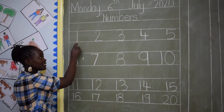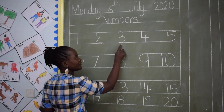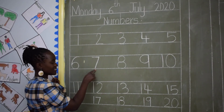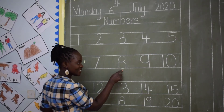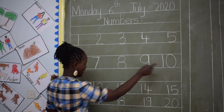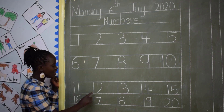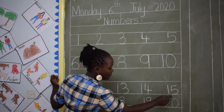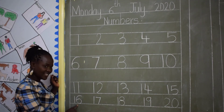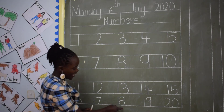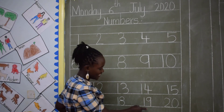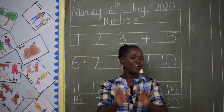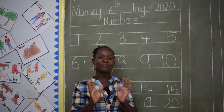Number 1, 2, 3, 4, 5, 6, 7, 8, 9, 10, 11, 12, 13, 14, 15, 16, 17, 18, 19, and 20. Thank you, children. Thank you for your time. And see you next time. Bye.